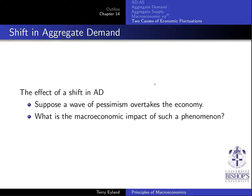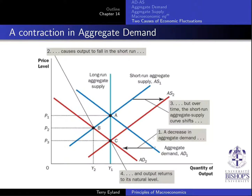Let's go through some examples. The effect of a shift in aggregate demand: suppose a wave of pessimism overtakes the economy — what is the macroeconomic impact? This affects aggregate demand. A wave of pessimism is going to drop investment, among other things. We started at point A, the initial aggregate demand curve. There is now a decrease in the aggregate demand curve, moving us over to point B.